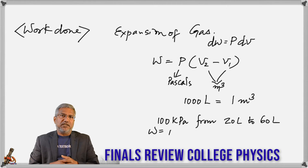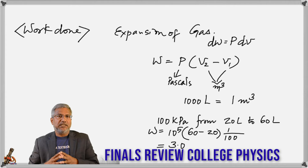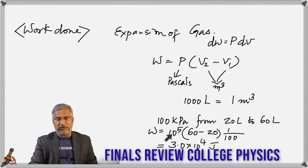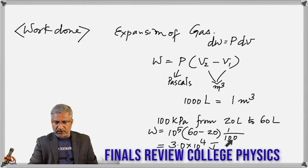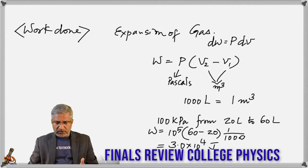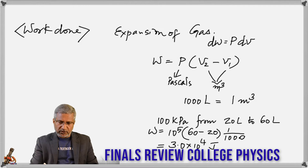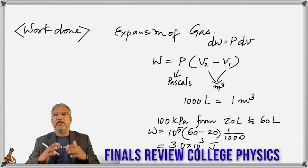Here's an example: the pressure is 100 kilopascals and the volume goes from 20 liters to 60 liters. 100 kilopascals is 10⁵ pascals. Multiply by (60 − 20) liters, dividing by 1000 to convert liters to cubic meters. That gives 3 × 10³ joules as the work done.